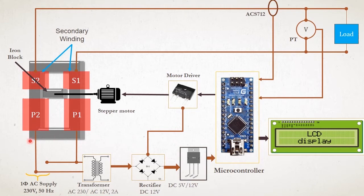Our transformer is divided mainly into three parts: the primary coil, secondary coil, and pole section. Another important part inserted in our system is a moving iron block, which is moved by using a stepper motor.